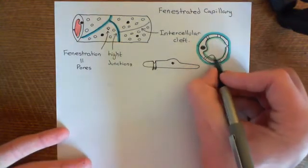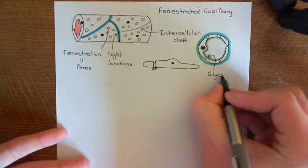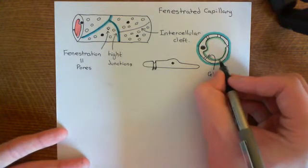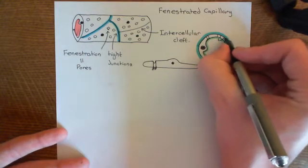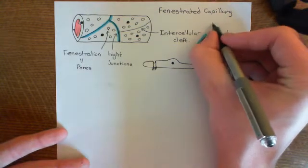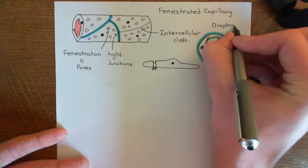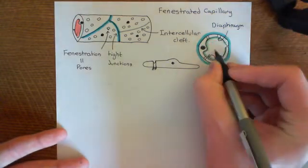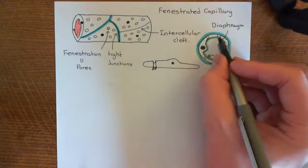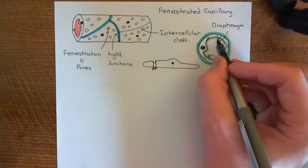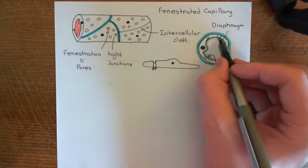So you still have the glycocalyx over these fenestrations — this polysaccharide layer covers the interluminal side of the fenestration. When you've got the glycocalyx covering over the luminal side of this pore, that's known as the diaphragm of the fenestration. This little portion of the glycocalyx that covers this pore is known as the diaphragm, and it's this diaphragm that prevents the coagulation factors from going out of the blood through this pore.